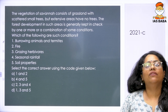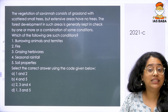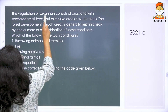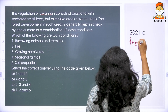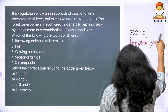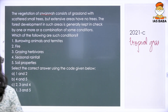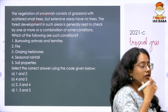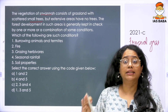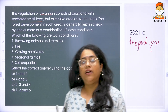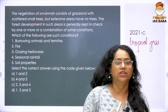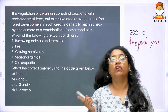The next question is a 2021 question, very similar to the one we just discussed. The vegetation of savanna — savanna is primarily your tropical grassland which scatters small trees, but extensive areas have no trees. In small areas here and there there are trees, but if you look at a very large area, the number of trees is quite less. The forest development in such areas is generally kept in check by one or more, or a combination of some conditions. Which of the following are such conditions?